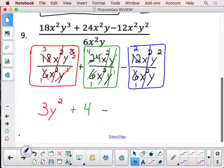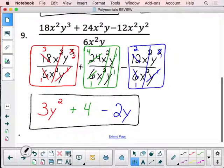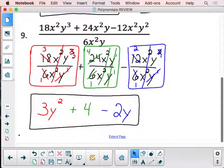And then I have the single y down here cancels and leaves me with a single y in the top. So I end up with 2y. And that's going to be our final solution. That's our dividend from dividing. And we end up with 3y squared plus 4 minus 2y. Those x squareds cancel out in every single term.